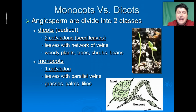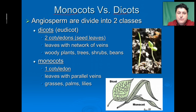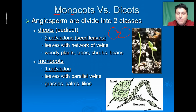Flowering plants can be further classified as either monocots or dicots. Dicots have two seed leaves — when they open up, they open like a book with two seed leaves. When we look at their leaves, they form a network of veins, like most trees. Good examples of dicots are trees, shrubs, and beans.